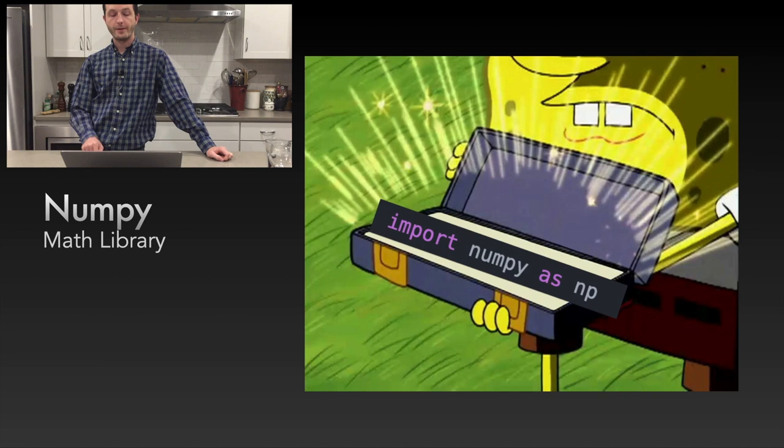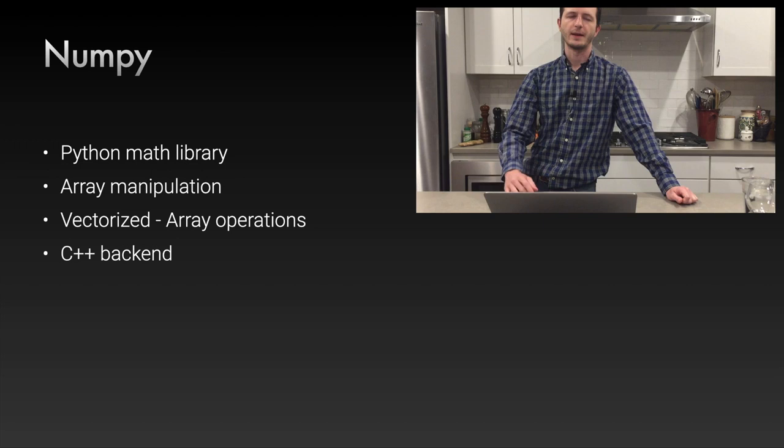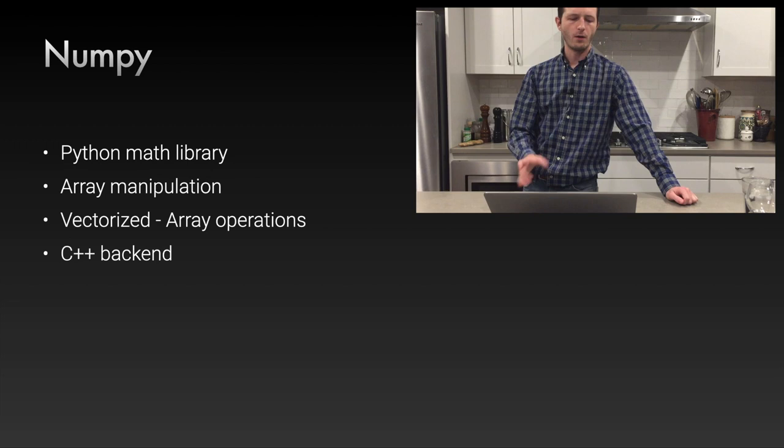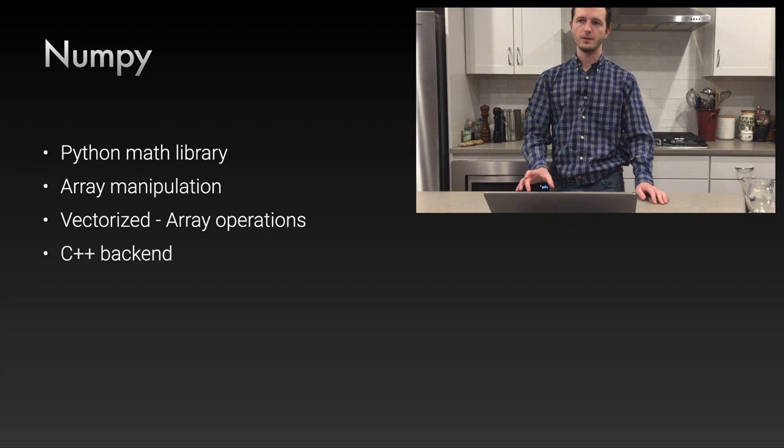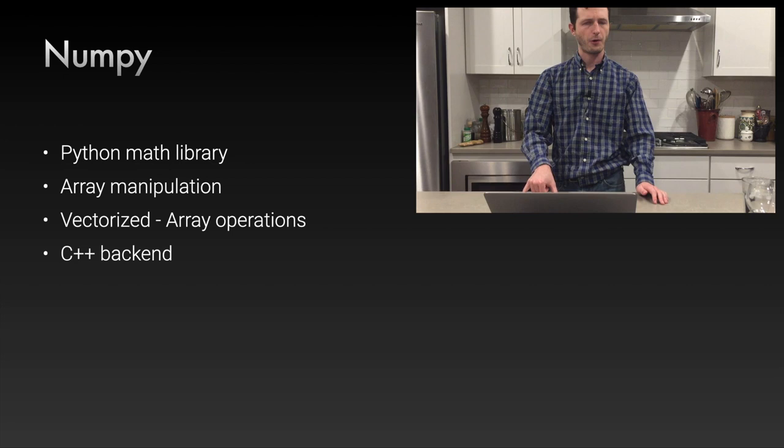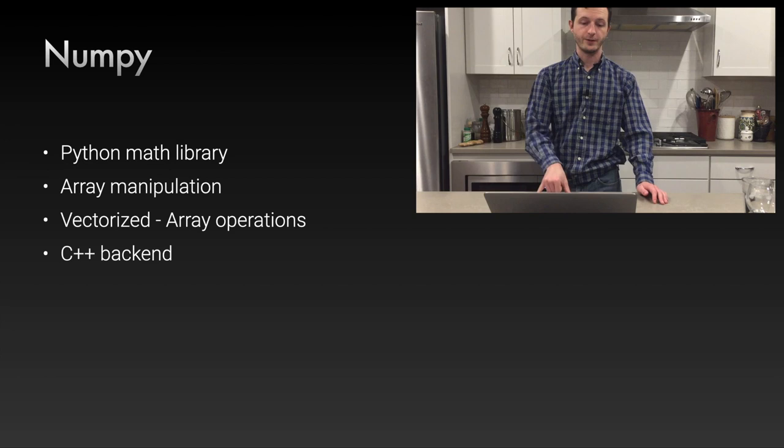NumPy is a math library for Python — import NumPy as NP. It has math and array manipulation: indexing, slicing, select along axis, sum along axis — all the things you need to manipulate an array. It's vectorized, so instead of looping through arrays you can say array.sum(axis=1), or array1 equals array2 plus array3. It also has a C++ backend which makes it very fast.